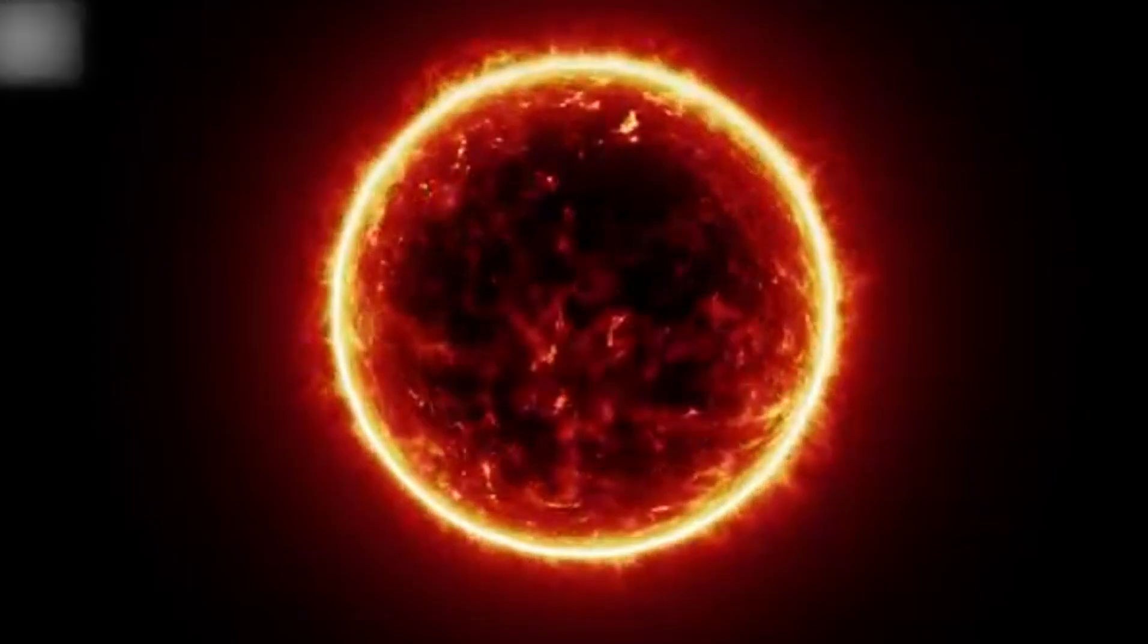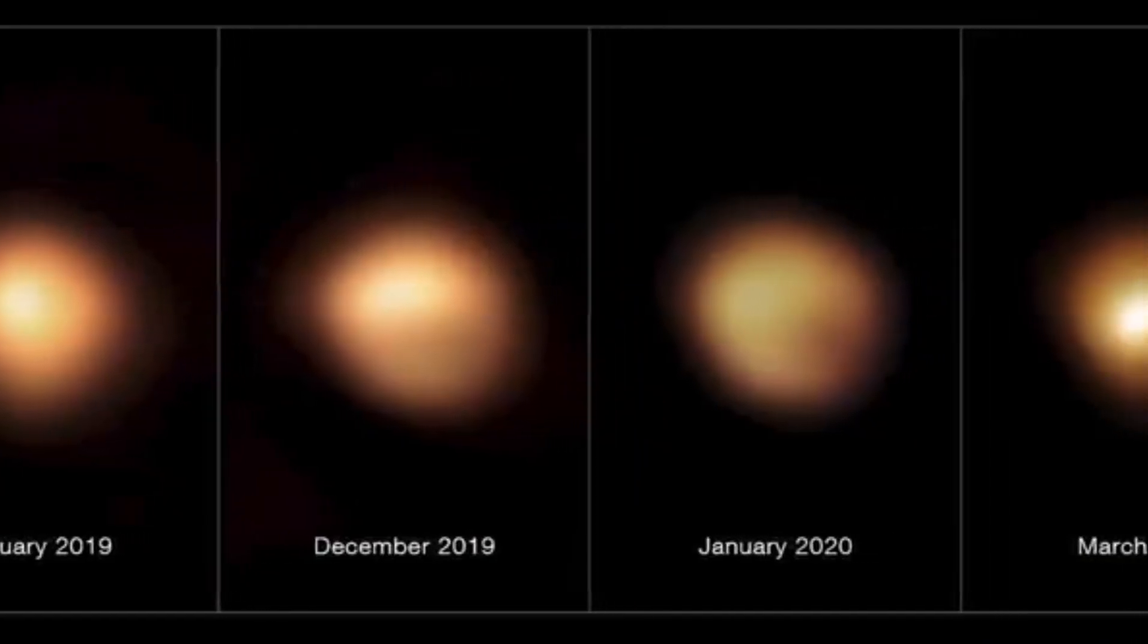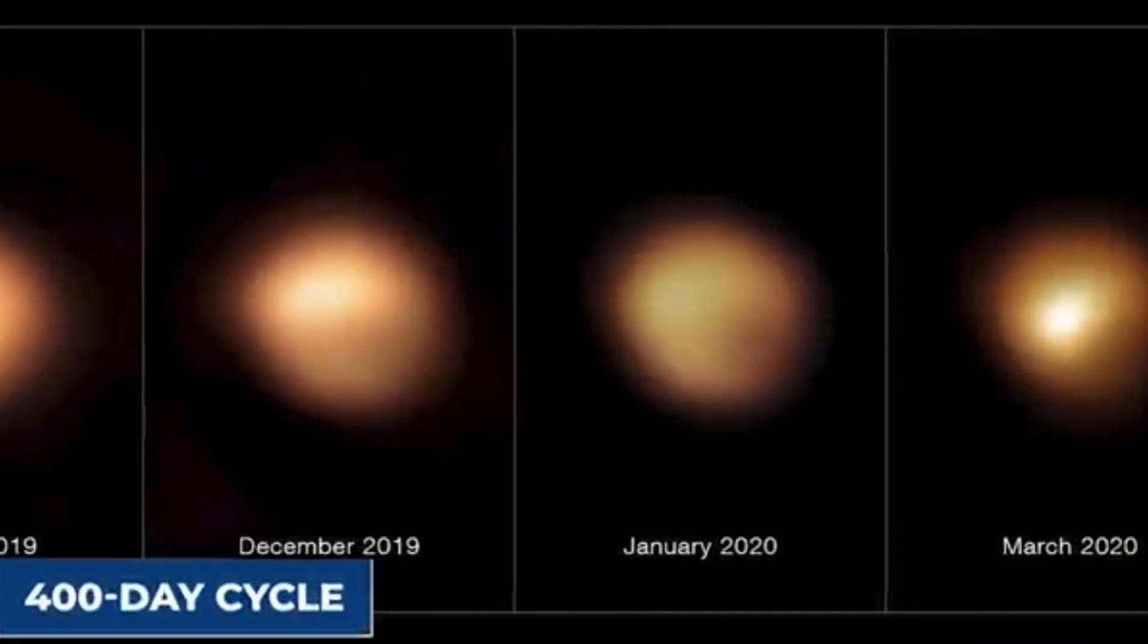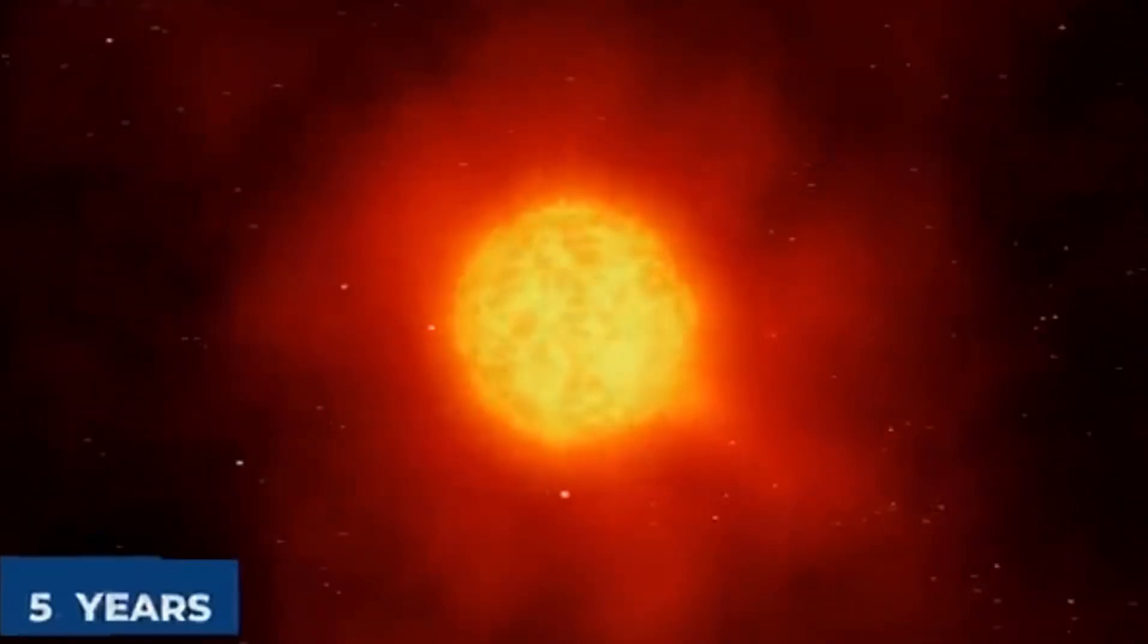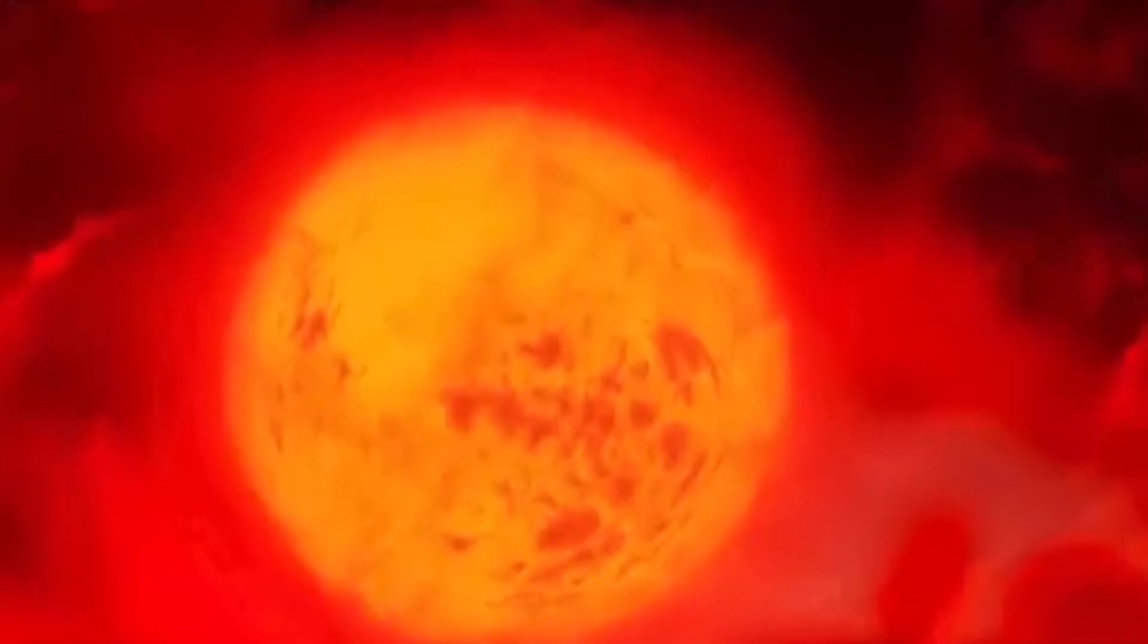Adding to Betelgeuse's mystique is its historical color change. Ancient Roman and Chinese writings suggest that around 2,000 years ago, Betelgeuse was yellow. It was only in the 9th century that Arabic scholars first described it as red. This color shift over human history is not just a detail in the annals of astronomy, it's a clue to the star's evolutionary path.